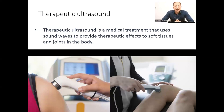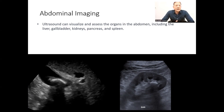Abdominal imaging — in the abdomen, we can image many organs like the liver, gallbladder, pancreas, and many other organs to detect abnormalities like liver abscess, kidney stones, gallbladder stones, and pelvic pathologies.